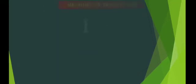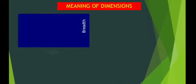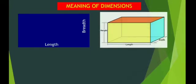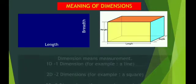Meaning of dimensions: Children, this is a rectangle. A rectangle has two measurements, length and breadth, whereas a cuboid has three measurements: length, breadth, and height.